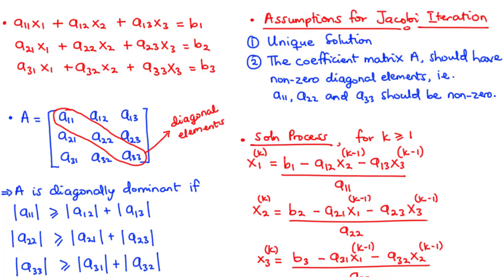Even if a non-diagonally-dominant system will converge, it may do so very slowly. That is why A is most preferably a diagonally dominant matrix, so that it gives a level of assurance that the approximation is most likely to converge to the exact solution.